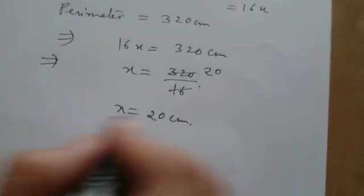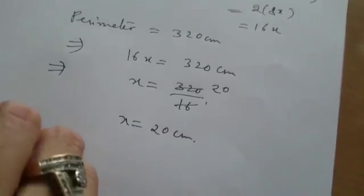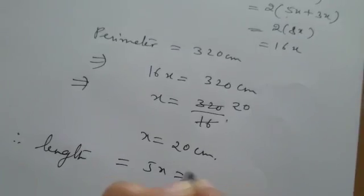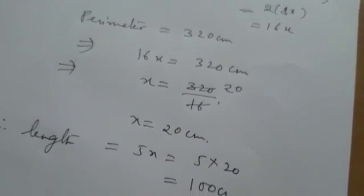So, what is this x? X is the common ratio between length and breadth. Yes, ma'am. So, what will be the length? Length is 5x. Length will be 5x is equal to 5 multiply 20 cm. That is 100 cm.